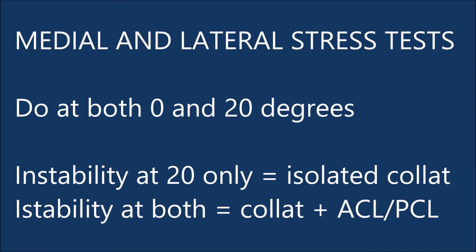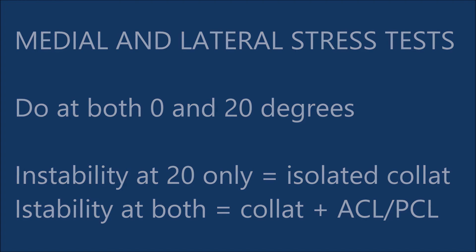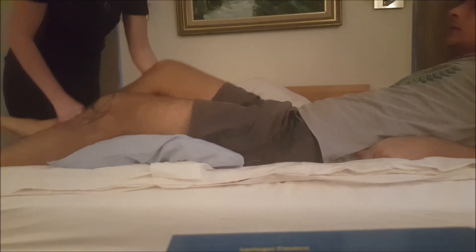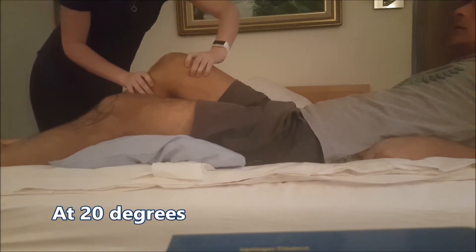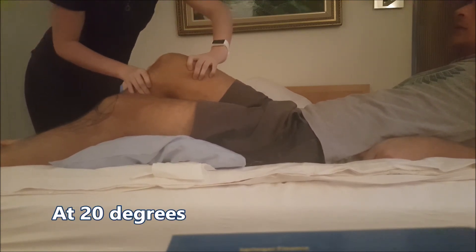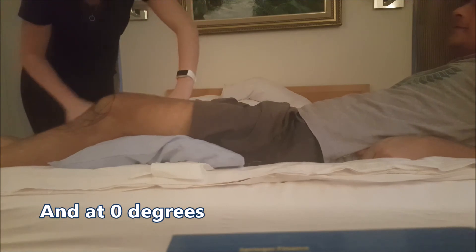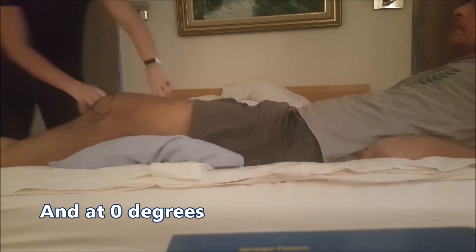Testing the collaterals: perform medial and lateral stress tests, each done at both 0 and 20 degrees. Instability at 20 degrees only indicates isolated collateral injury, whereas instability at both 20 and 0 degrees indicates an additional ACL or PCL pathology. To do the stress test, firmly pull the tibia side to side, attempting to sublux it at the joint, at both 20 degrees and at 0 degrees.